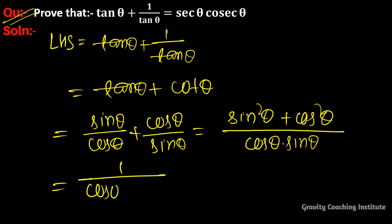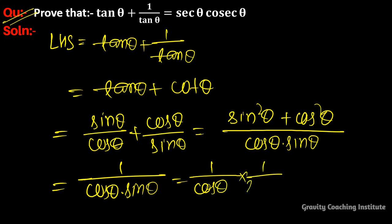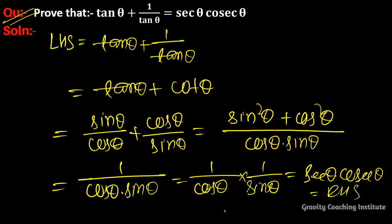This simplifies to 1/cos θ · 1/sin θ, which equals sec θ · cosec θ = RHS. Hence proved.